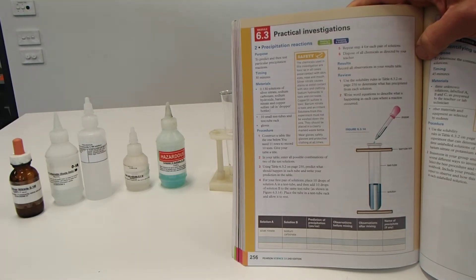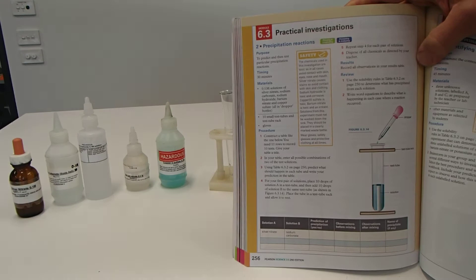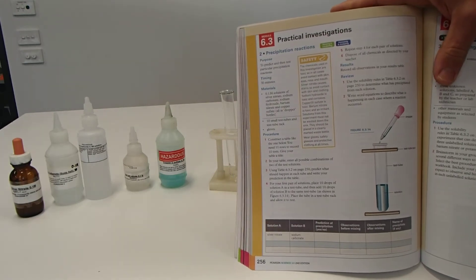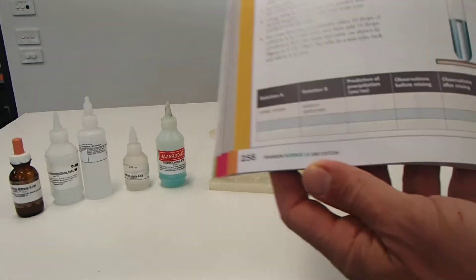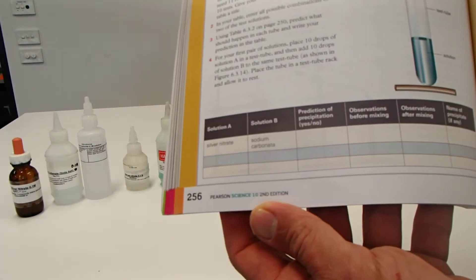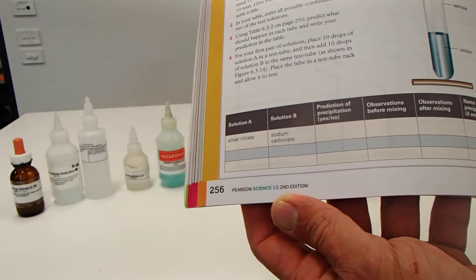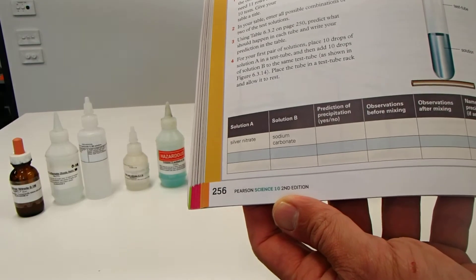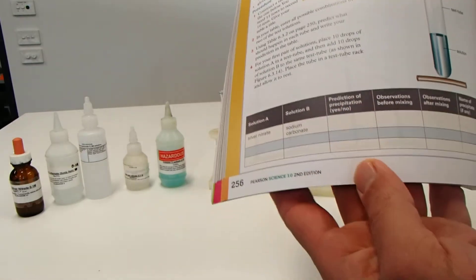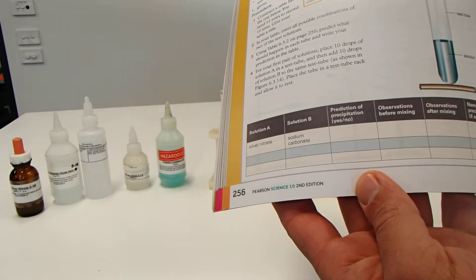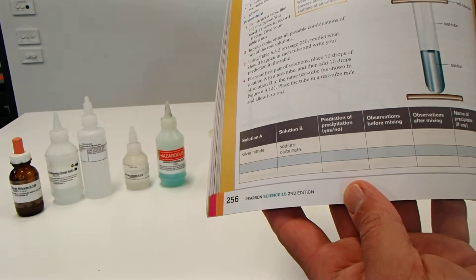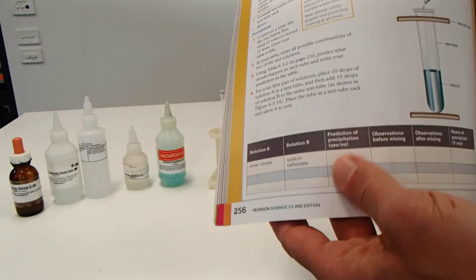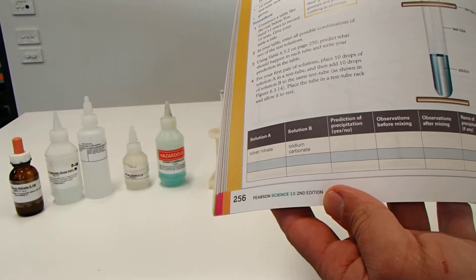Hopefully by now your teacher's been through it or you've read the compass or Google lesson plan and you should have created a table or have access to a table that looks something like that. You should have also made a prediction whether you think there will be a precipitation or not based on the solubility table earlier on in the book. So you make a prediction and we'll see today if these predictions come out.